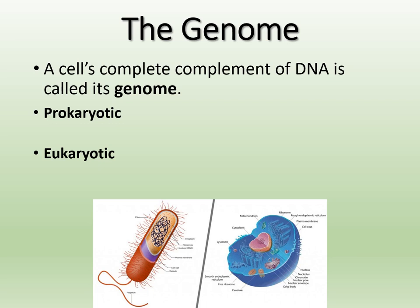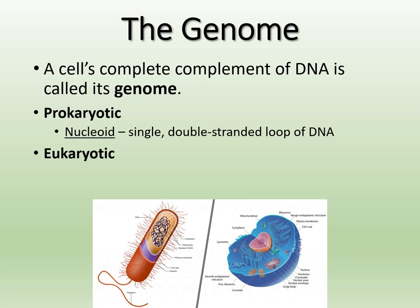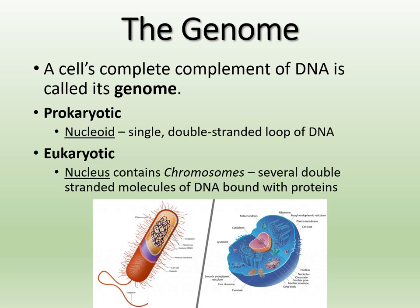Where is the genome found? In prokaryotic cells, the DNA is in the nucleoid — just a single double-stranded loop of DNA found in one area of the cell, with no nuclear membrane. In eukaryotic cells, we do have a nucleus, and we have chromosomes, because there are several double-stranded DNA molecules bound with protein. There's so much DNA in a eukaryotic cell that it must be packaged a certain way to fit inside the nucleus.